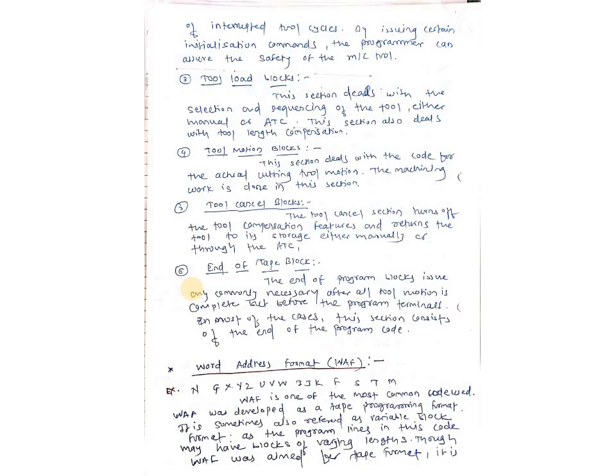Next point is word address format, that is WAF. This is the most important part of the programming — it is the syntax for writing any program. The code is: N G X Y Z U V W I J K F S T P M. This is the code for writing any NC program.